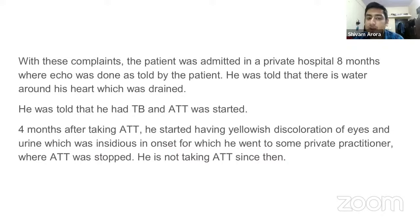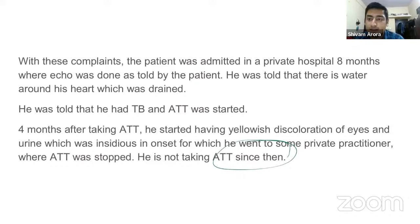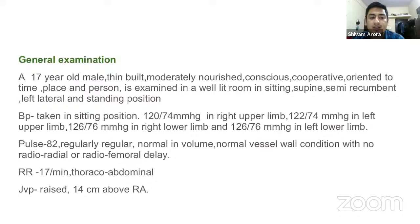Eight months back, the patient went to a private hospital where a 2D echo was done and he was told there is water around the heart which needs to be drained. A catheter was inserted and fluid was sent for biochemical parameter testing. He was told he had TB and ATD was started. Four months after taking ATD, he developed yellowish discoloration of eyes and urine, possibly due to ATD hepatitis or right-sided heart failure. A private practitioner then stopped ATD and he had not been taking it since.